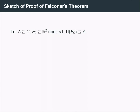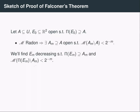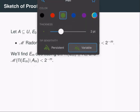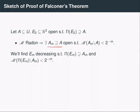Let's sketch the remaining details of Falconer's theorem using the previous lemma. Let A be a subset of the Grassmannian bundle, and let E0 be an open set whose projection contains A. Because the measure M is Radon, we can find a decreasing sequence of open sets containing A so that the measure of the differences between these sets and A decreases geometrically. Our goal is to find a decreasing sequence E_m of sets whose projections contain A_m, with the measures of the differences also decreasing geometrically — so that the intersection of these sets will be a set where the difference in measure from A is zero.